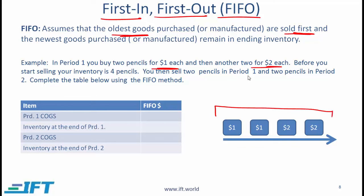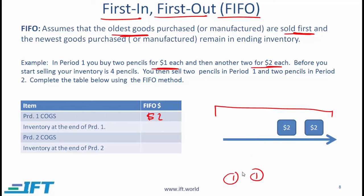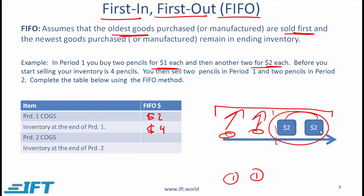You then sell 2 pencils in period 1. Under the first in first out approach, you will sell the 2 pencils that you bought first for $1. With this method, the cost of goods sold for period 1 is $2, because each of those items was $1. The inventory at the end of period 1 would be the 2 pencils worth $2 each — so ending inventory is $4. Notice that with FIFO, the items you bought first are sold first, and you are left with the 2 items at $2 each.